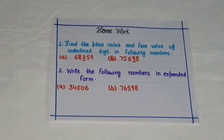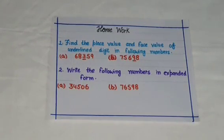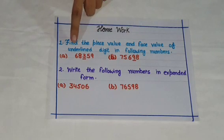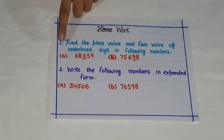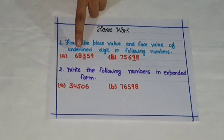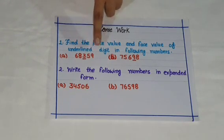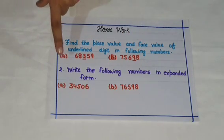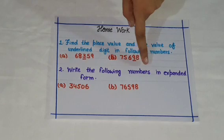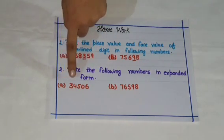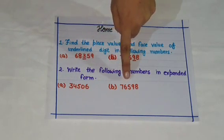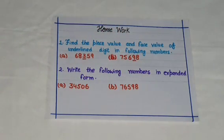Dear students, this is your homework. First, prepare a number card with the help of paper and solve the sums. The first sum: find the place value and face value of the underlined digit in the following numbers — A: 68,359 and B: 75,698. The second sum: write the following numbers in expanded form — A: 34,506 and B: 76,598. Thank you.